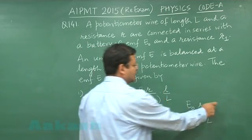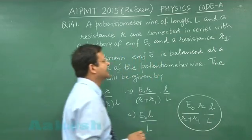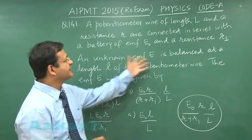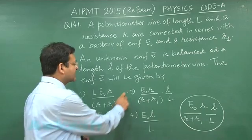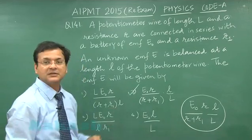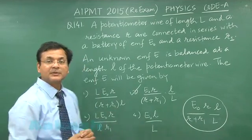This is the EMF that will be detected when you will be connecting. So it is saying that unknown EMF E is balanced at a length small l, so that small l has been multiplied here. For that matter, the correct option that will be marked as 3, that is the answer to question number 141.